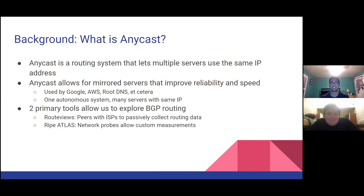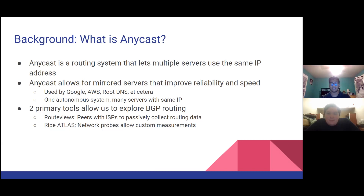Two primary tools allow us to explore BGP routing that we used extensively in this project. First is RouteViews. RouteViews is what's known as a passive collector — it peers with a bunch of ISPs and autonomous systems to collect routing data that crosses the Internet every day. RIPE Atlas is slightly different; it's an active system that allows us to use software and hardware probes located around the world and make network measurements by sending them commands that they then perform and send the results back to us.